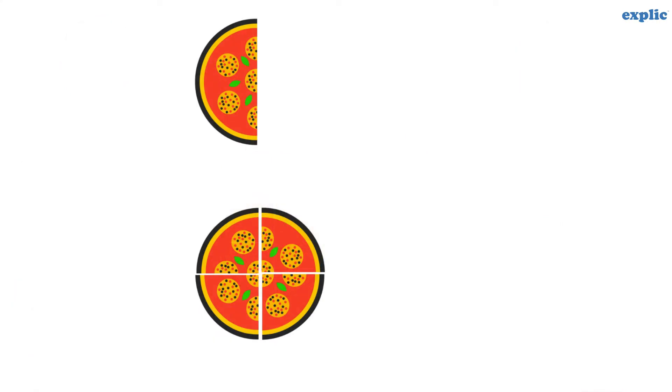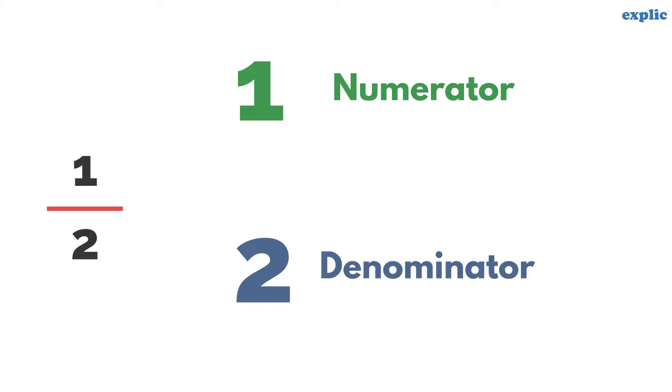Remember, to find out the fraction, the parts should be of equal size. A fraction has two parts. The top part is called the numerator and the bottom part is called the denominator.